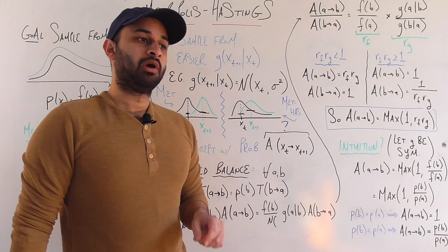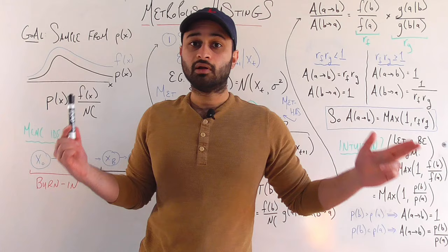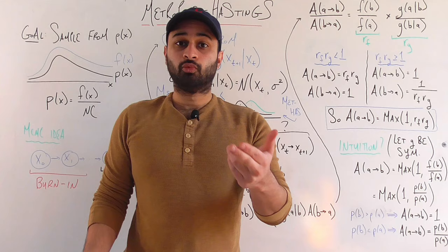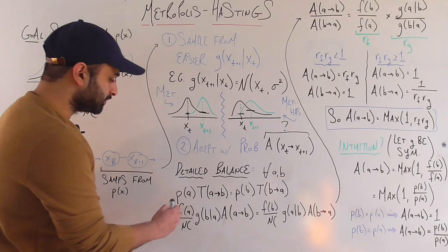We go back to the detailed balance condition, discussed in the initial MCMC video. If we can show that the probability of going from any state x_t to any next state x_{t+1} satisfies detailed balance, then p of x will be a stationary distribution of the Markov chain, and eventually the chain will be sampling from p of x.